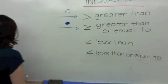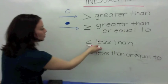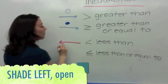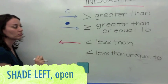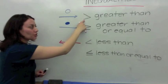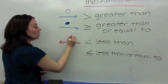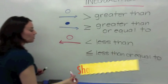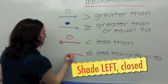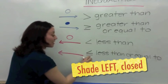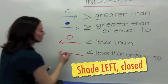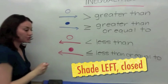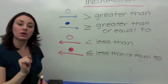When you're talking about less than, it points to the left, so shade everything to the left. The circle is open — if there's no little line, it's open. Less than or equal to means shade everything to the left, but because it's equal to, splat — fill it in. This is what you need to know to graph simple inequalities.